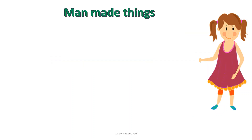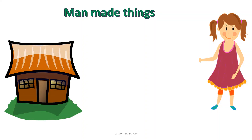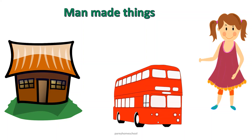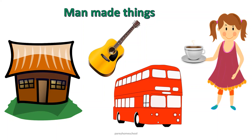A few of the non-living things are man-made. For example, a house is man-made and it is a non-living thing. A bus is man-made and it is a non-living thing. Guitar, cup and saucer — these are all man-made things and they are also non-living things, because they don't have life.